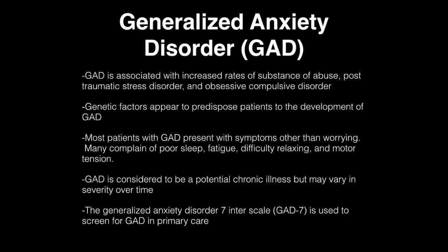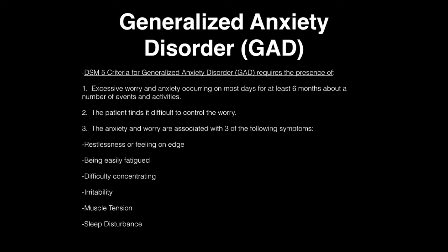The GAD-7 scale is used to screen for generalized anxiety disorder in primary care. The DSM-5 criteria for generalized anxiety disorder include excessive worrying and anxiety occurring most days for at least six months about a number of events and activities, with the patient finding it difficult to control their worry. The anxiety and worry are associated with three of the following symptoms: restlessness or feeling on edge, feeling easily fatigued, difficulty concentrating, irritability, and muscle tension.